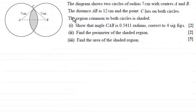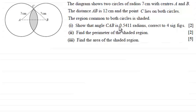In this question we're given a diagram showing two circles of radius seven centimetres with centres at A and B. The distance AB is 12 centimetres, point C lies on both circles, and the region common to both circles is shaded. We need to show that angle CAB is 0.5411 radians correct to four significant figures, then find the perimeter and area of the shaded region.